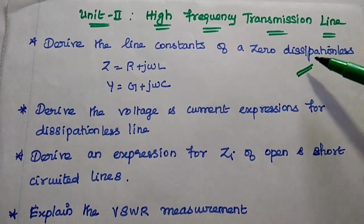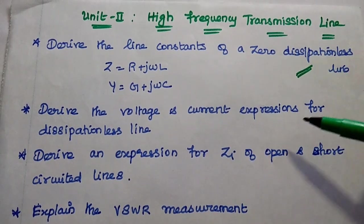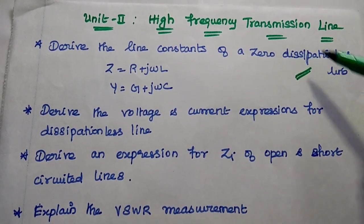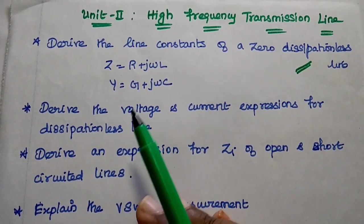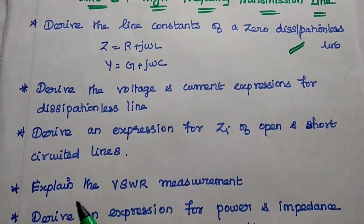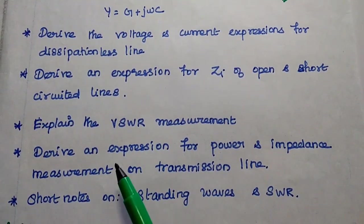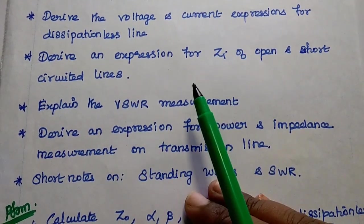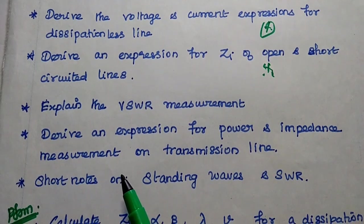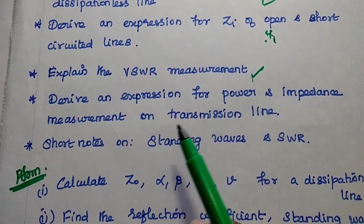The second unit is all about high frequency transmission line concepts. It is a very simple unit and we can directly expect these questions in university examinations. The first one is to derive the line constants of a zero dissipation line or dissipationless line, showing the relation between primary and secondary constants. Next, derive the voltage and current expressions for a dissipationless line, and derive the expression for input impedance of open circuited and short circuited lines. Also, measure the VSWR with a proper setup, and derive an expression for power and impedance measurement on a transmission line.